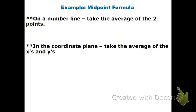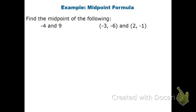Midpoint formula: I'm just going to take the average of the numbers. If I have an x and a y and I want to find the midpoint, I'm just going to take the average of the x's and the average of the y's. All I have to do is add together the numbers and divide by 2.